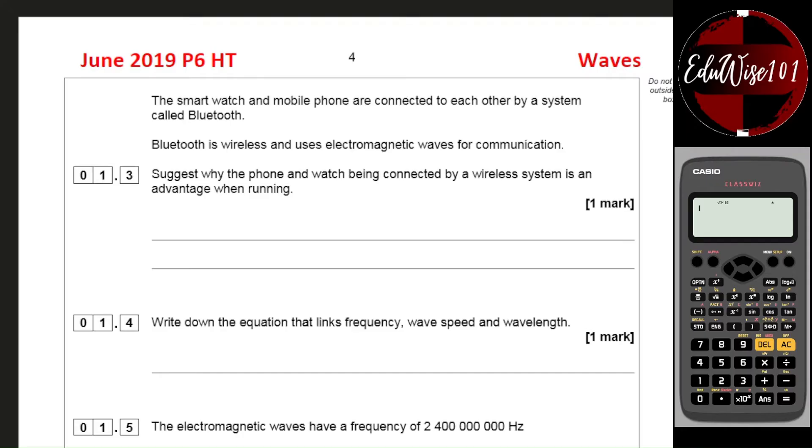Now still on question one, but this part is actually on the waves topic. The smartwatch and mobile phone are connected to each other by a system called Bluetooth. Bluetooth is wireless and uses electromagnetic waves for communication. Question 1.3: suggest why the phone and watch being connected by a wireless system is an advantage when running. Now there are several reasons that you can write. Main reason being wireless means that we don't have any wires, so that means the wires are not going to get tangled up while the runner is running around and it will be easier to move the arms.